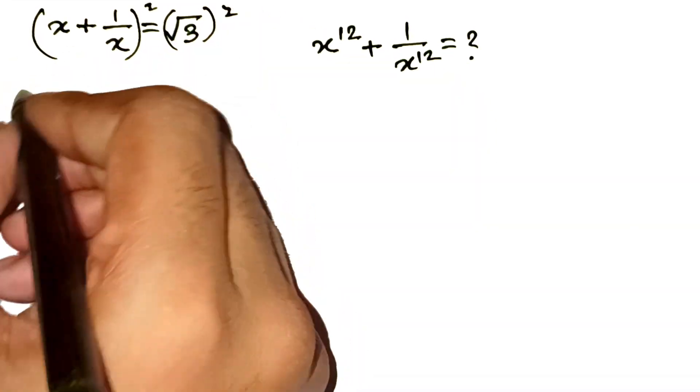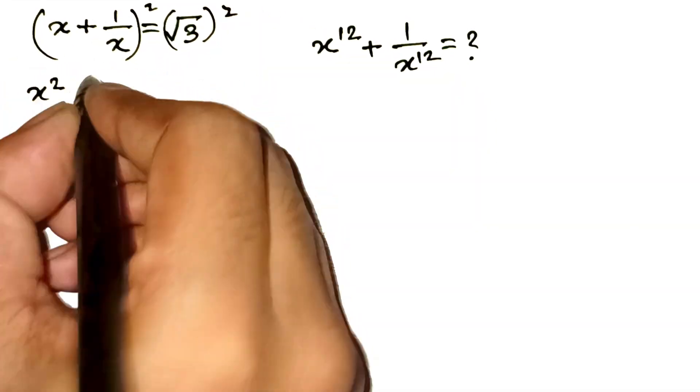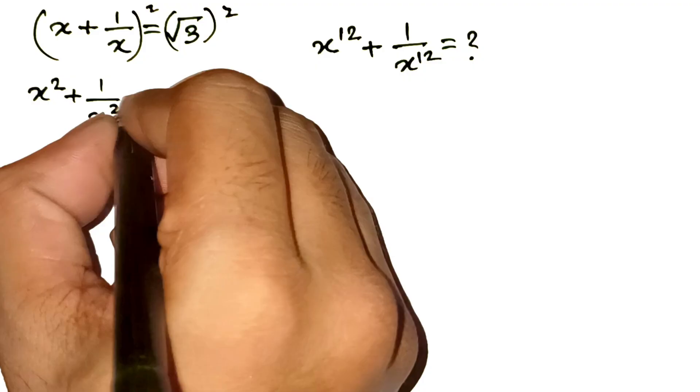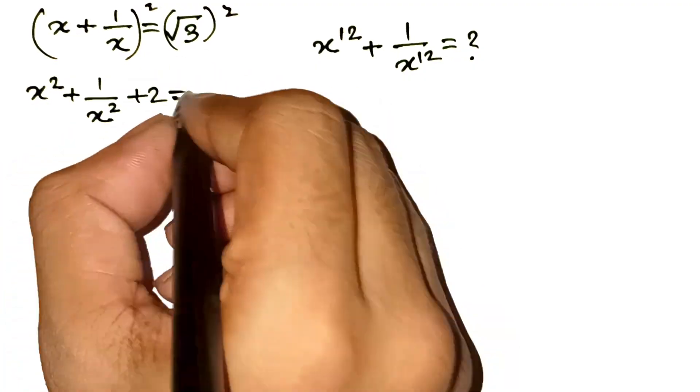Compare both sides. On the left, when we expand, we get x squared plus 1 over x squared plus 2. And on the right, we get 3.